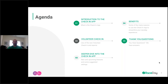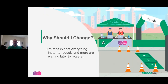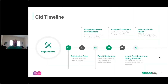Why should you switch to the check-in app? Athletes are expecting everything instantaneously — they're waiting later to register but still expecting results now. The old timeline: for a lot of race directors, you close registration on Wednesday (or Sunday/Monday for turkey trots), then export registrations and email them to your timer.